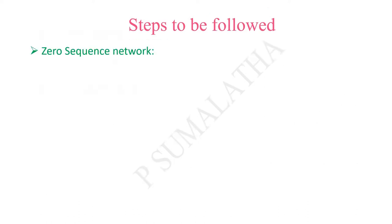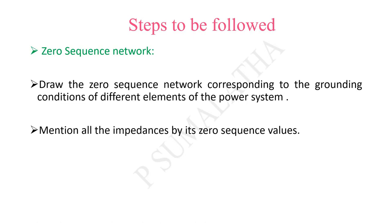Coming to the zero sequence, the zero sequence network is the most important compared to the other networks. Some precautions need to be taken while drawing the zero sequence network because it is represented corresponding to the grounding conditions of different elements of the power system. Especially based on transformer winding connections, we have different connections with respect to series as well as shunt switches — star versus delta — and we represent all impedances with respect to the zero sequence values.